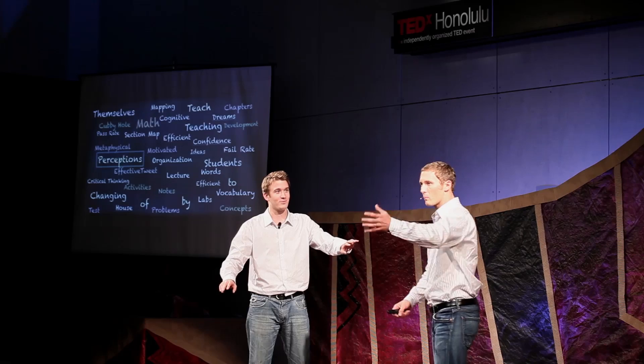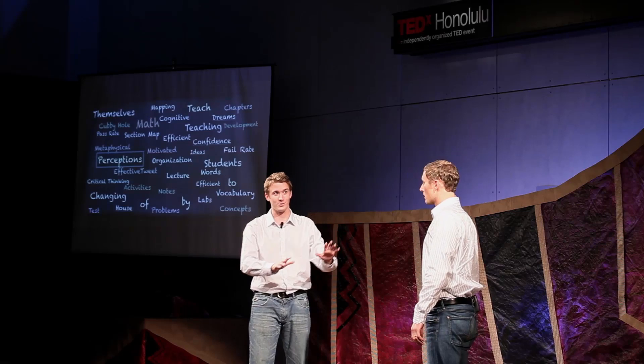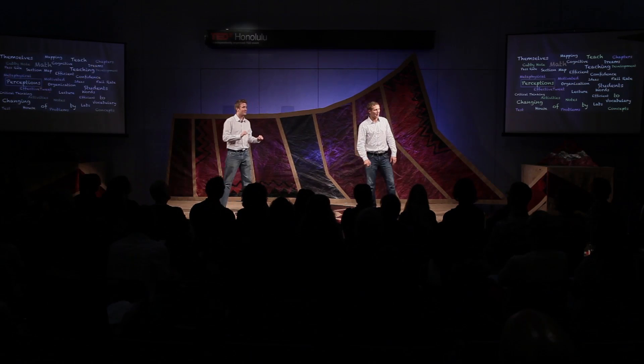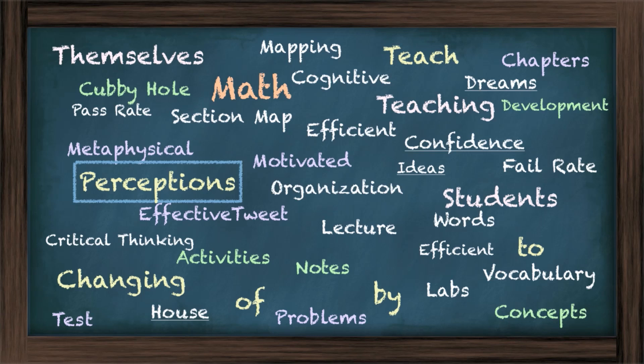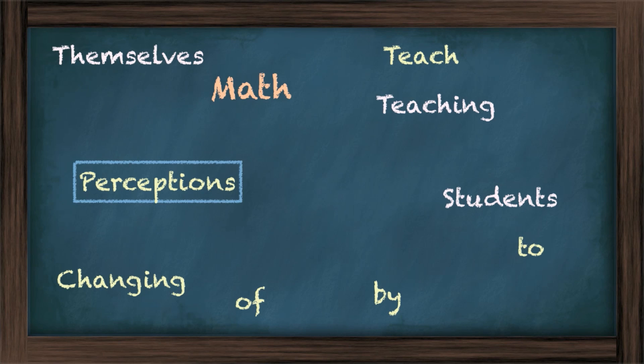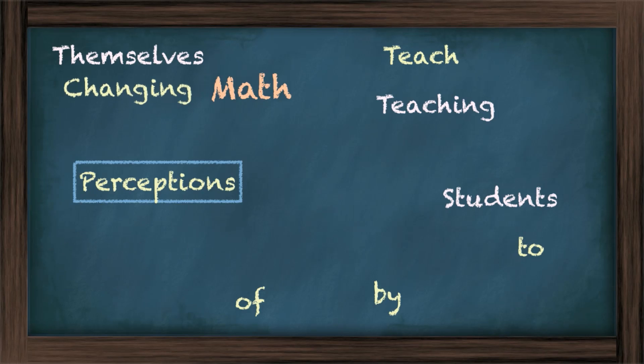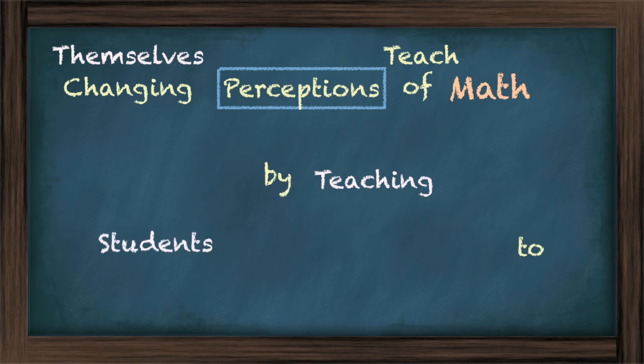Whoa, whoa, Sean — do you have any idea how many words you just put in the audience's head? Yeah. Let's clear things up a little bit. What are the main ideas we're going to be talking about today? How about perceptions, students, math, themselves? Yeah, something like that. Can you organize the ideas so it's perfectly clear to the audience what we're talking about? All right. Sorry, I get a little excited. Tell about changing perceptions of math by teaching students to teach themselves. There we go. Much better.